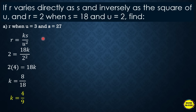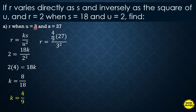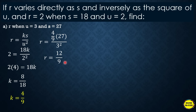The equation of variation is R = (4/9)S/U². To find R when S = 27 and U = 3: substitute to get R = (4/9)(27)/3². Since 3² = 9, and 27/9 = 3, we get 3 × 4 = 12 over 9, which simplifies to 4/3. So R = 4/3.